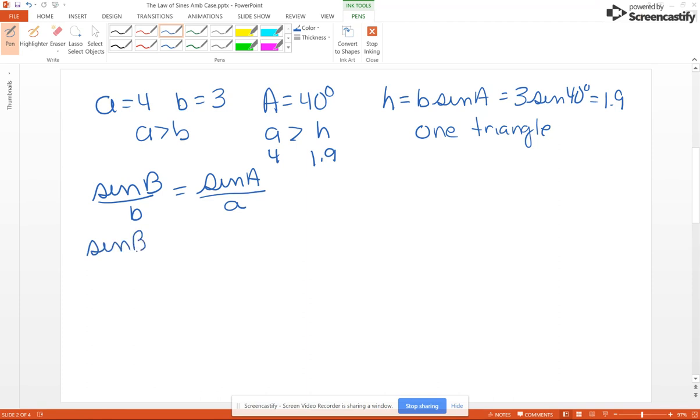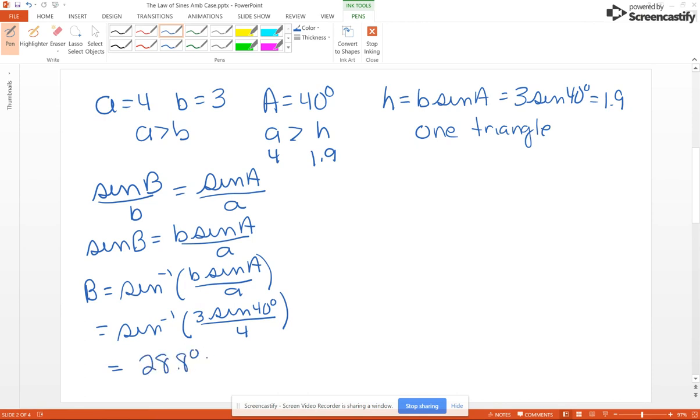Sine of B is going to be B sine of angle A over A, so B is going to be the inverse sine of B sine of A over A – so that's the inverse sine of 3 sine of 40 over 4. Plugging this carefully into your calculator, closing all the parentheses that you need to close, you should get 28.8 degrees, which we'll round to 29 degrees for convenience.